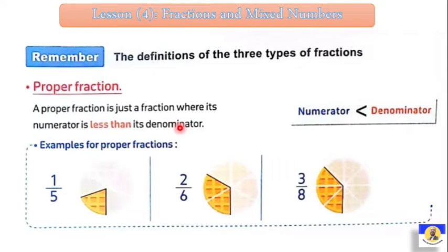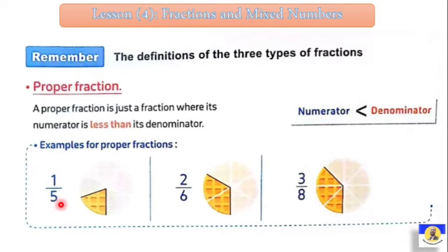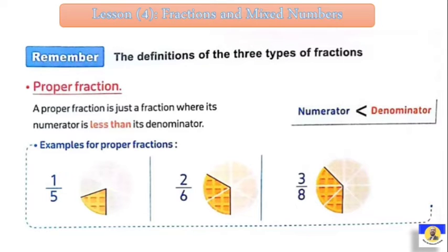So a proper fraction has its numerator smaller than its denominator — the number on top is smaller than the number on the bottom. For example: one over five, two over six, three over eight — all of these are proper fractions. They are the natural fractions we have been working with.